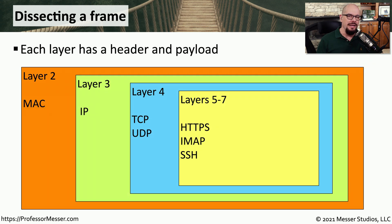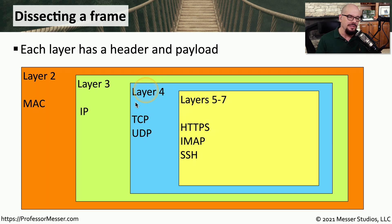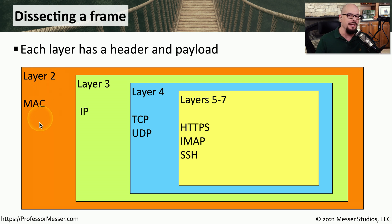Here's another way to visualize how this data is being encapsulated and decapsulated on both sides. We can start with our layer 5 through 7 application data — such as HTTPS, IMAP email information, or SSH terminal screens — where we're then going to take all of that and encapsulate it within some type of layer 4 protocol, commonly TCP or UDP. We then encapsulate the layer 4 traffic within layer 3, which these days is commonly IP traffic. And finally, layer 2 information on ethernet would be a media access control address, or MAC address, and that encapsulates all of this data within it.